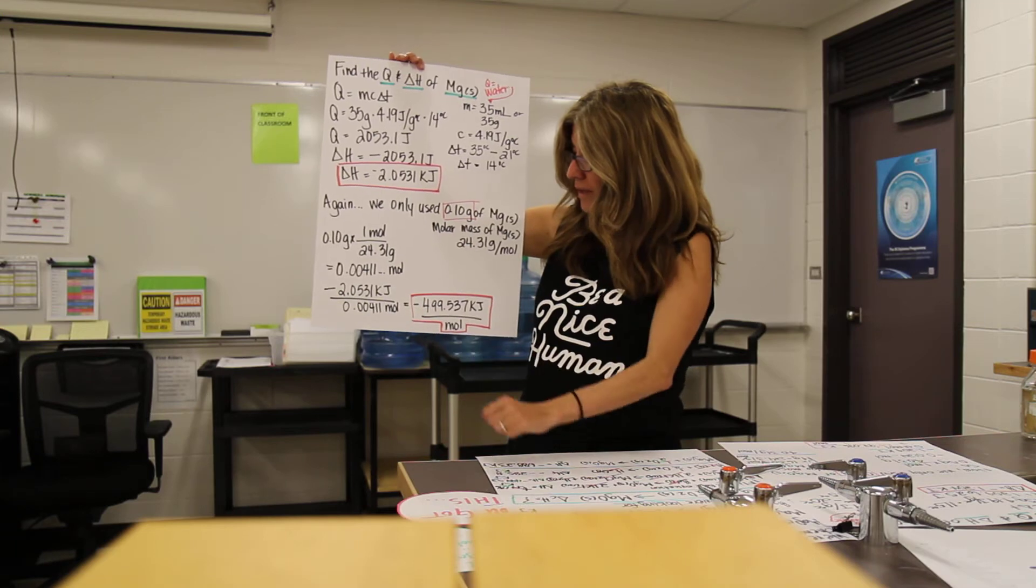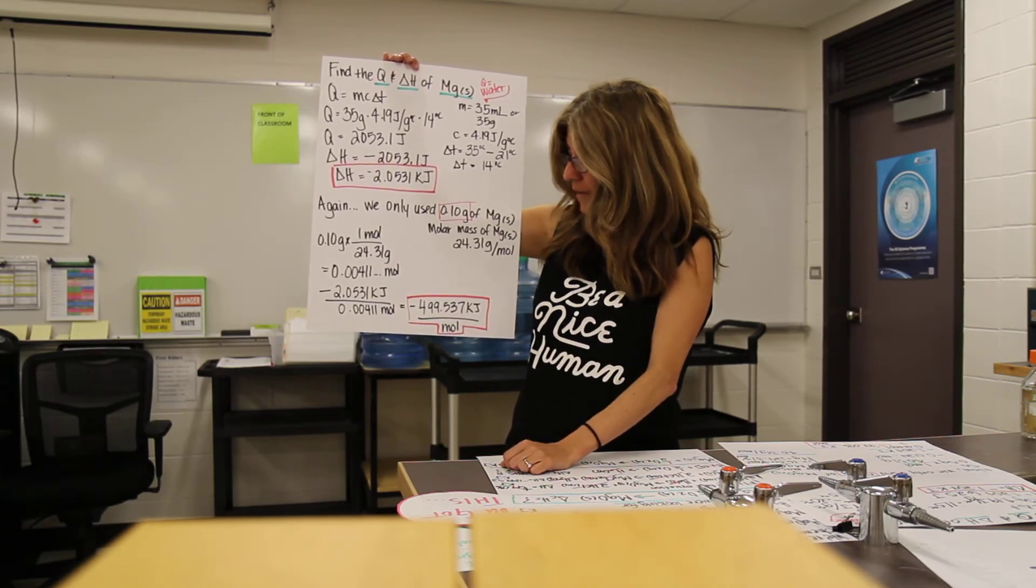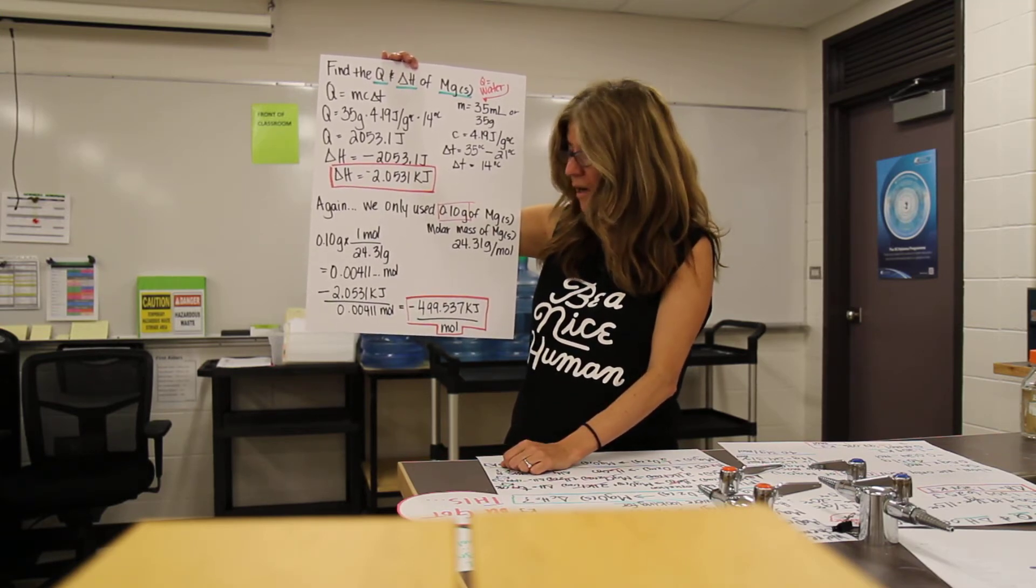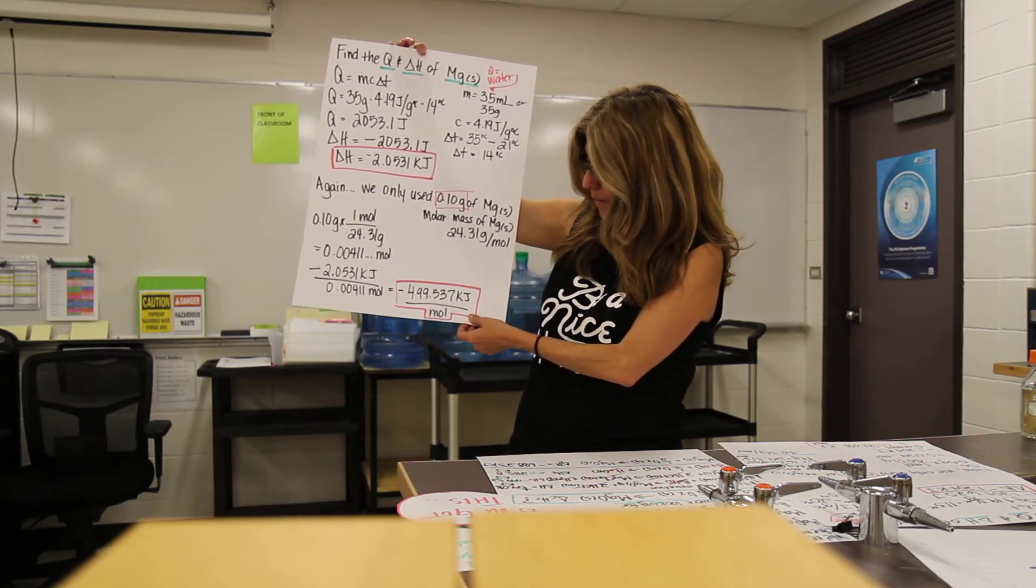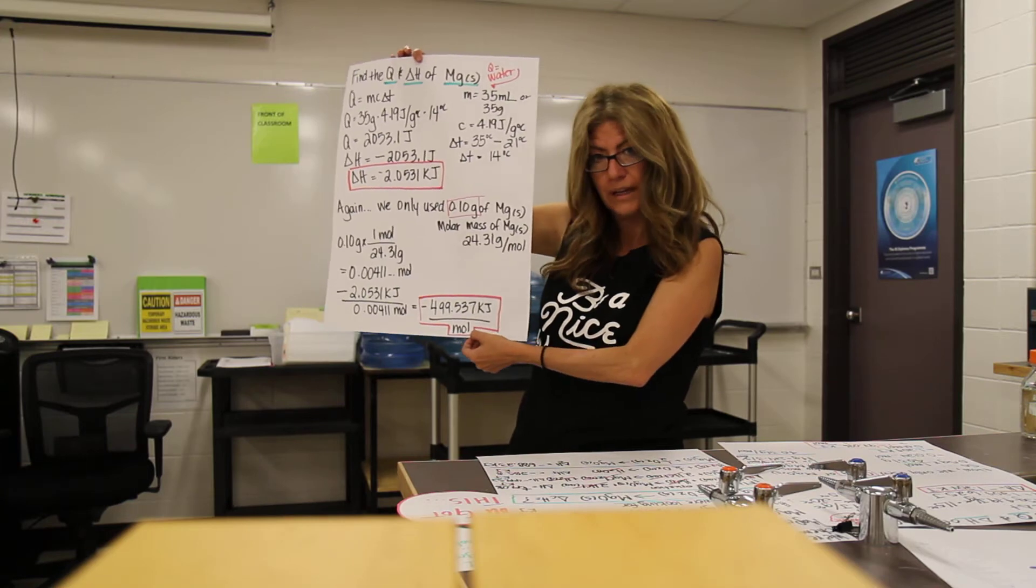And now I'm going to take my negative 2.053 kilojoules, divide that by 0.00411, which are the moles of magnesium. And we're going to get a lovely number of negative 499.537 kilojoules per mole. Okay, kiddos?